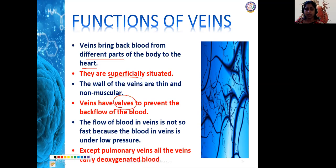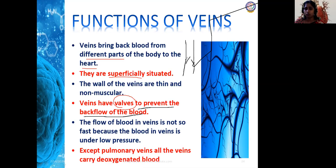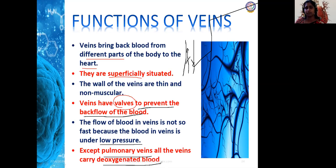Veins have valves to prevent the back flow of blood. When blood moves against gravity it should not come back, so the valve helps the flow. Blood flow in veins is not fast because it is under low pressure, whereas arteries carry blood under high pressure. Except for the pulmonary vein, all veins carry deoxygenated blood.